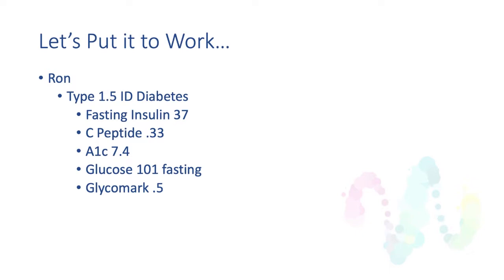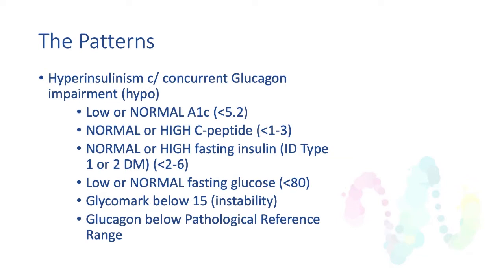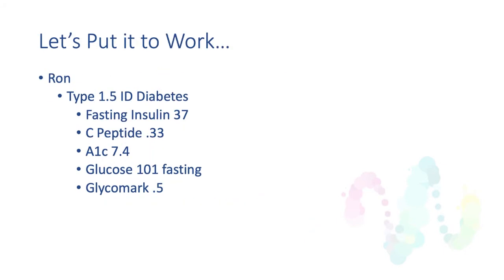Here's Ron — Type 1.5 diabetes, fasting insulin of 37, so quite a bit of insulin resistance. The C-peptide shows the pancreas is still working, though a little dysfunctional. Glucose is 101 — not bad — but the A1c does not match the glucose, and the Glycomark is terrible, showing significant glucose excursions. With a fasting insulin of 37, this patient falls right into the hyperinsulinism with concurrent glucagon impairment category. Ron needs some help.